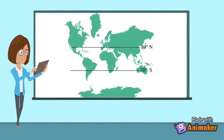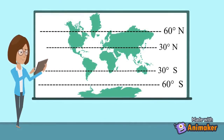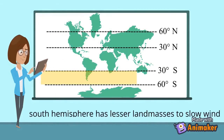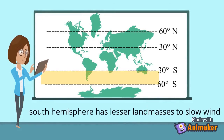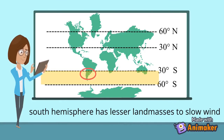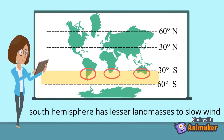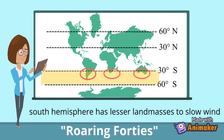Between the 30 and 60 degree latitudes, the Southern Hemisphere has fewer land masses to slow the wind. The only land masses present are the tip of South America, tip of Africa, Australia, and the islands of New Zealand. This area is known as the Roaring Forties.